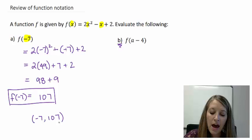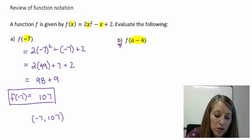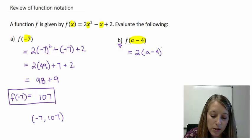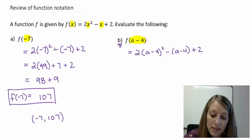In part b, f of a minus 4, basically again, I just take this a minus 4 and I substitute it in for any place that I see an x. So that gives me 2 times a minus 4 squared minus an a minus 4 plus 2. And notice I substitute my a minus 4 in parentheses in both of these because that means it gets inserted as one unit.